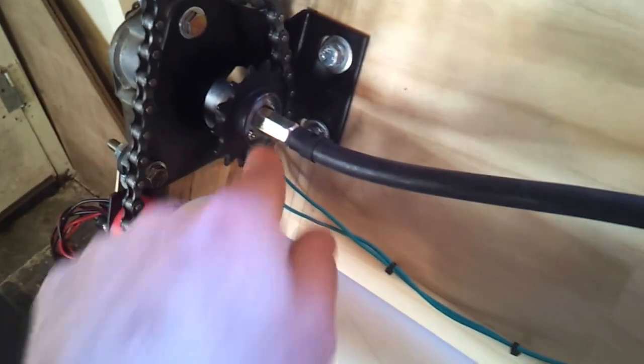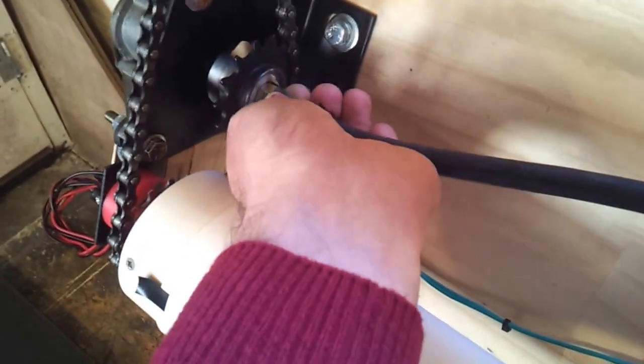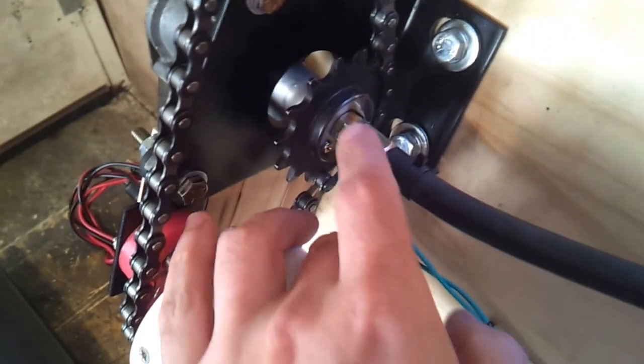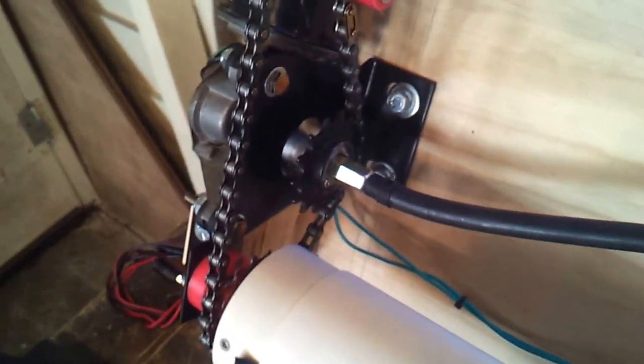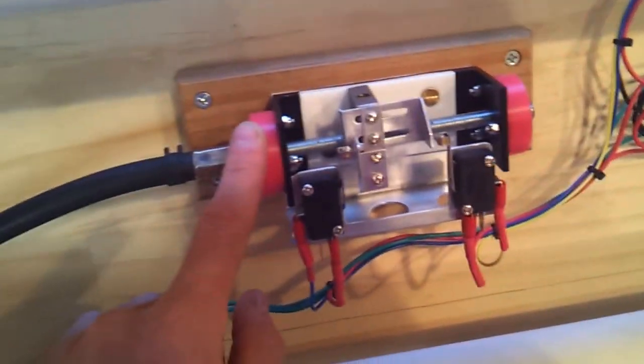The nut here is held—it's basically done up really tight, and then there's just a little bent over tab washer there which sits up against the flat of the nut, and that's what stops it coming undone. The drive, as I said, goes down this flexible coupling to this unit.